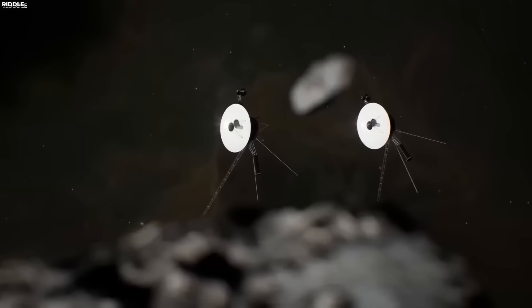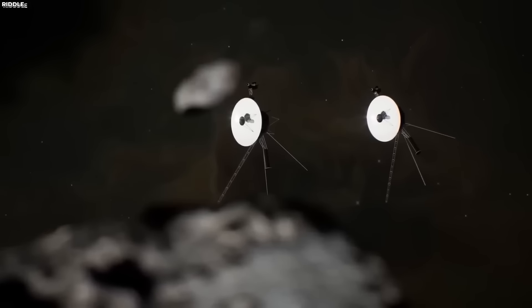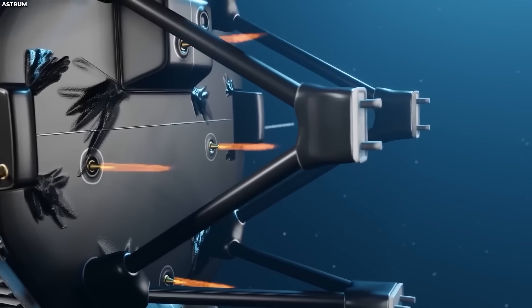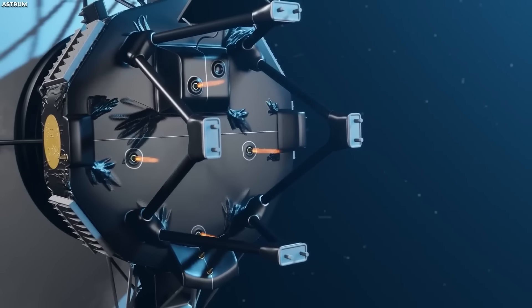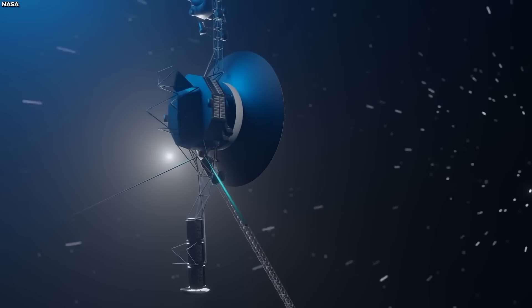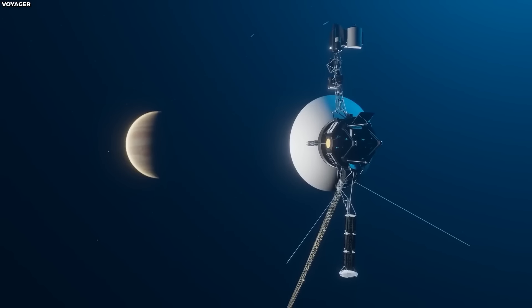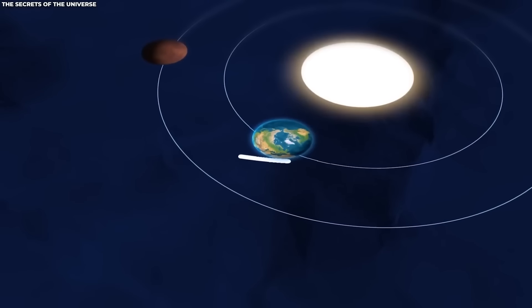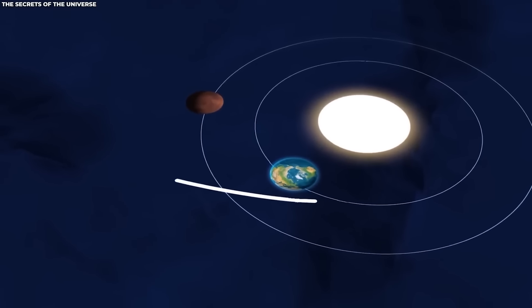Interestingly, Voyager 1's path took it very close to Saturn's moon Titan, where it discovered a hazy orange atmosphere with complex chemistry. Each flyby brought new questions and loads of data that challenged what we thought we knew about these distant worlds. Unlike regular spacecraft, Voyager 1 and 2 were precisely designed to rotate 15 times slower than a clock's hour hand, which reduced blur as they sped through space, allowing them to capture clear images and data. Even before reaching the outer planets, they amazed scientists and the public with their impressive imaging.